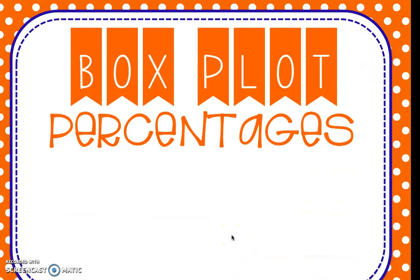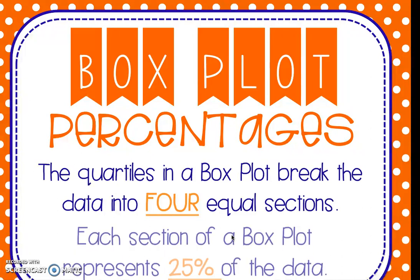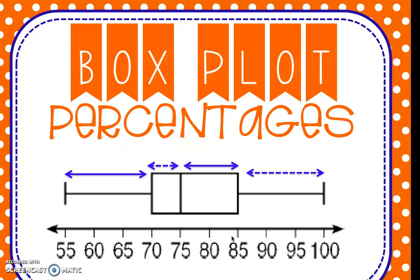The big reason that we make box plots and find interquartile range is that we can break the data into four equal parts, and we call those quartiles. Each quartile, when broken up into four equal sections, is worth 25%. So each section of a box plot represents 25% of the data. This section from our lower extreme to our lower quartile is worth 25%. So if this was a test score made into a box plot and you got a 60, you would fall in the bottom 25% of the data.